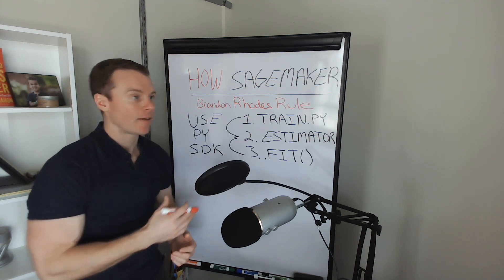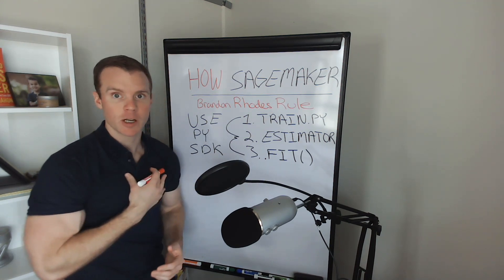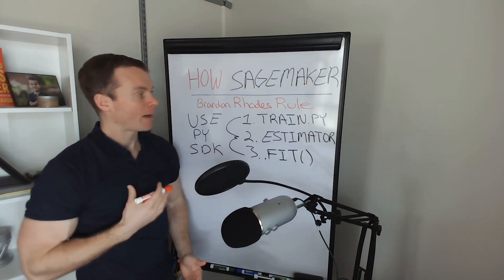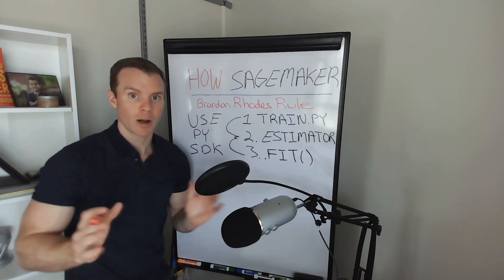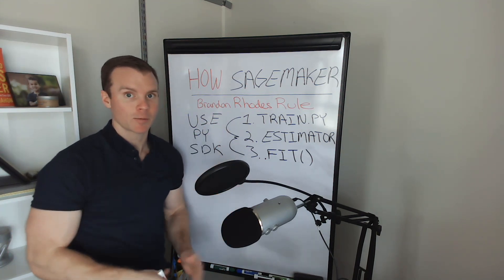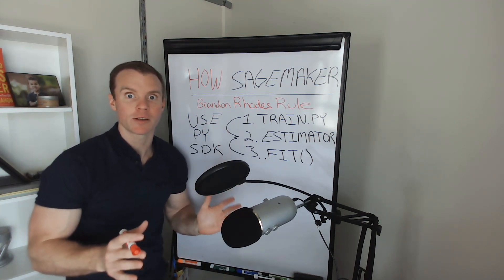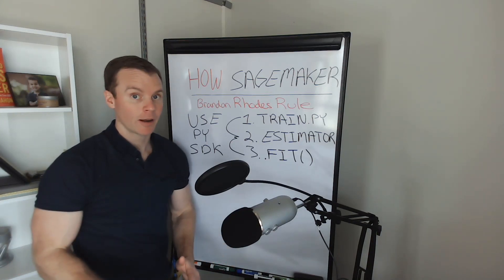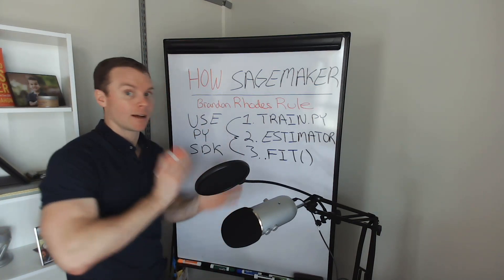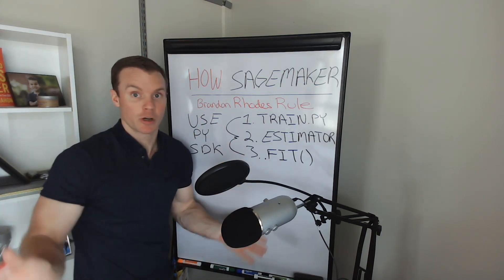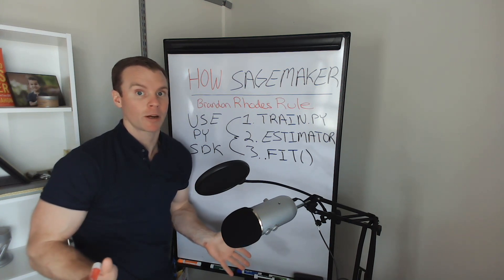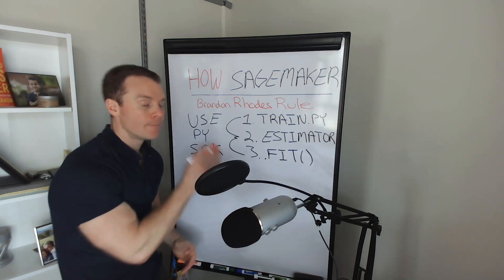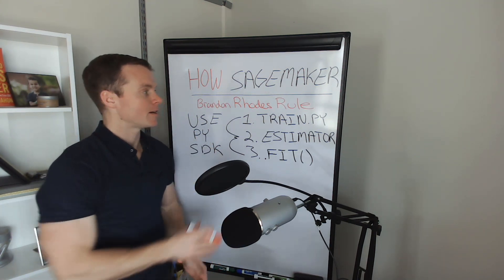So with that said, where should we run SageMaker? Should we figure out Studio, Lab, etc.? I like to follow the Brandon Rhodes rule. Brandon Rhodes is a Python expert. Among other things, he wrote this great book, Python for Networking. Even if you don't care about networking — which you should, because we're in the cloud and we're surreptitiously conscripted into being network admins to a certain extent — chapter one is amazing.